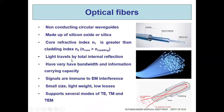The fifth type of transmission lines are optical fibers. We can see images of optical fibers here. These are non-conducting circular waveguides made up of silicon oxide or silica. The principle of propagation of electromagnetic waves inside an optical fiber cable is by total internal reflection. Total internal reflection occurs when the core refractive index is greater than the refractive index of the cladding.